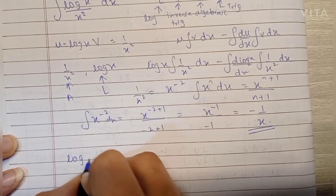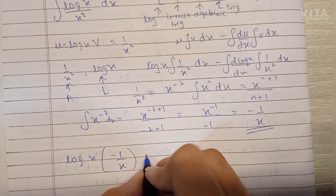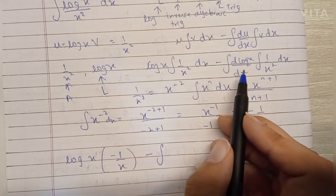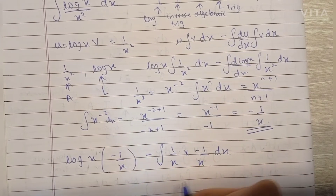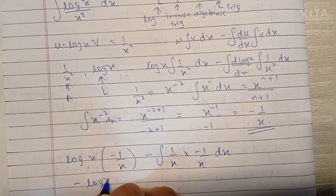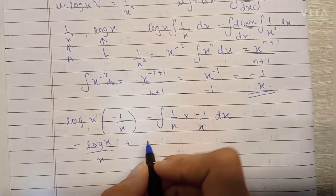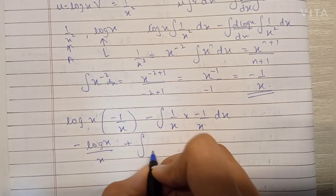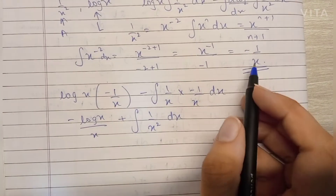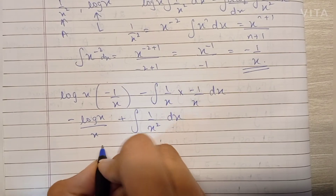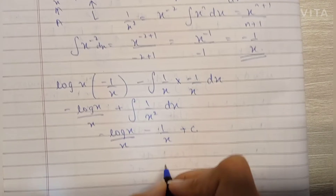So we have log(x) into minus 1/x, minus the integration of the differentiation of log(x), which is 1/x, into minus 1/x dx. This gives minus log(x)/x. Taking the minus sign outside, this becomes plus the integration of 1/x², and we just saw that the integration of 1/x² is minus 1/x.